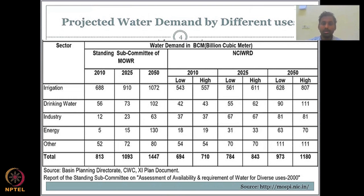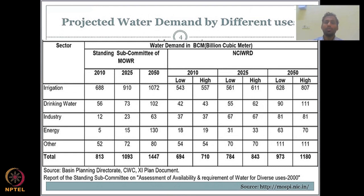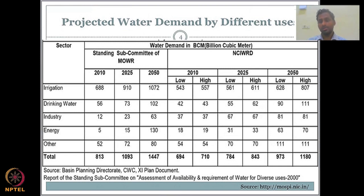Looking at the sector data from the Standing Subcommittee of the Ministry of Water Resources, we have three estimates for 2010, 2025, and 2050. There is also another estimate from the National Committee on Integrated Water Resource Development. These different government agencies do their estimations differently with different data sources, which is why you see differences in the estimates.